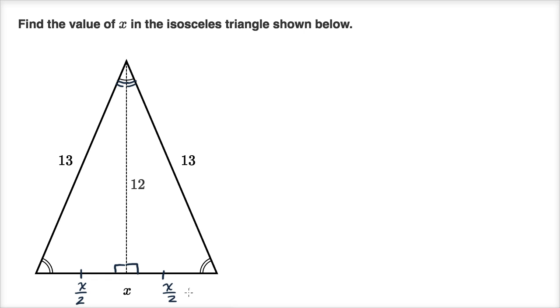And so now we can use that information and the Pythagorean theorem to solve for x. Let's use the Pythagorean theorem on this right triangle on the right hand side. We can say that x over two squared,